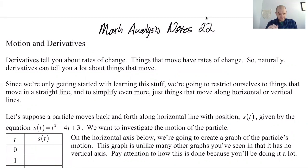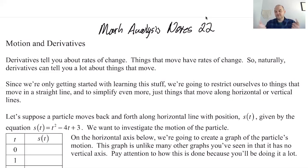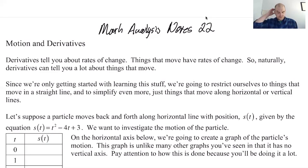So, motion and derivatives. Derivatives tell us rates of change — the slope of a curve, the slope of a tangent line. Since they tell us rates of change, the most obvious application is telling us how things are moving. If we have a position function that tells us the position of a thing over time — say at t equals zero it's at x equals six, at t equals five it's at x equals one — the rate of change of position is velocity.